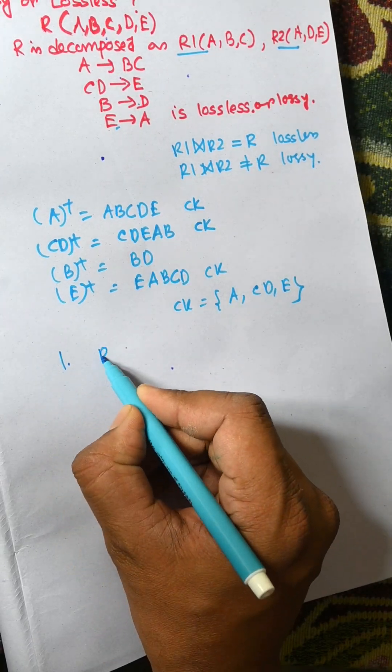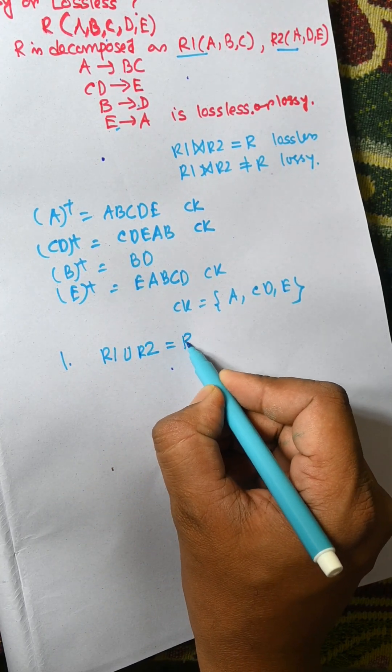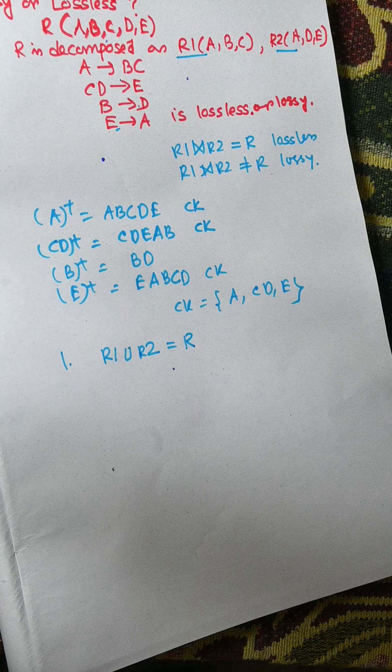R1 union R2. We need to find if R1 union R2 equal to R, then the first rule is applied.